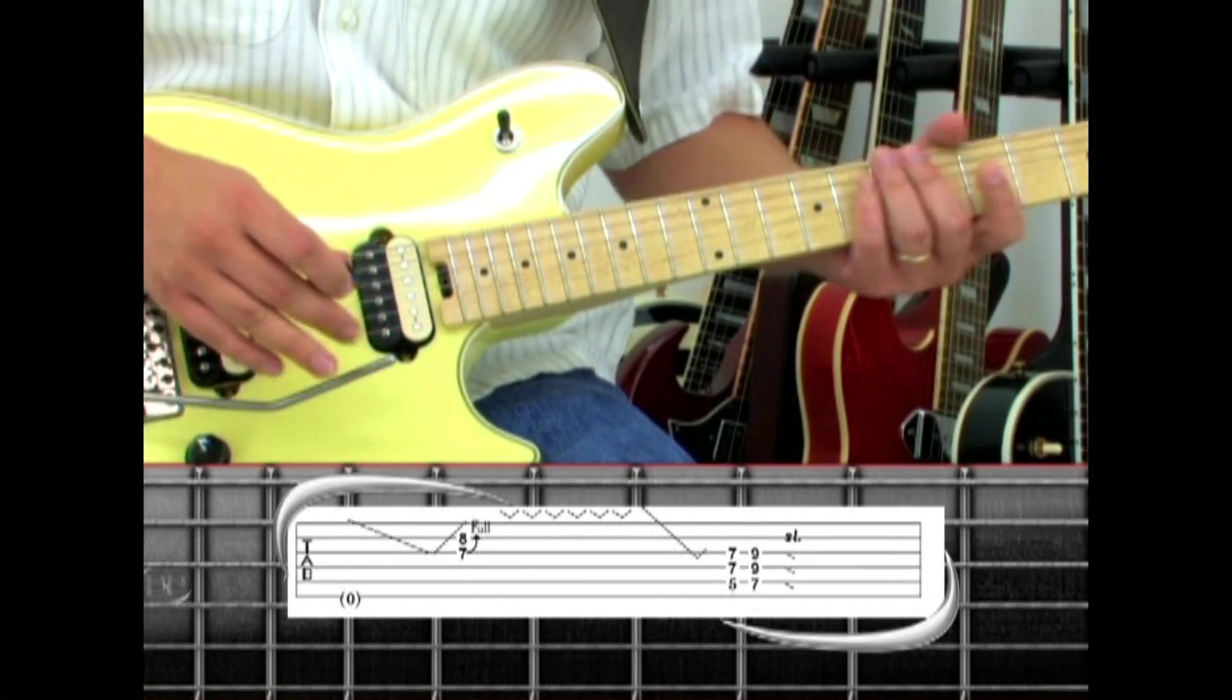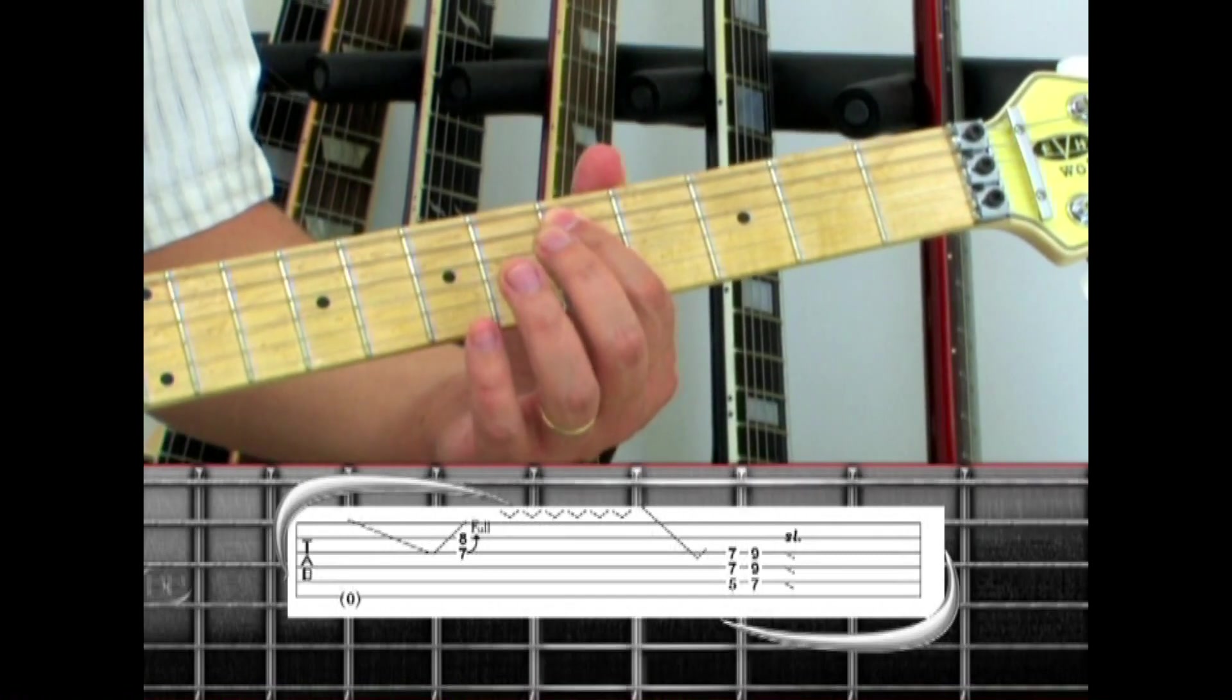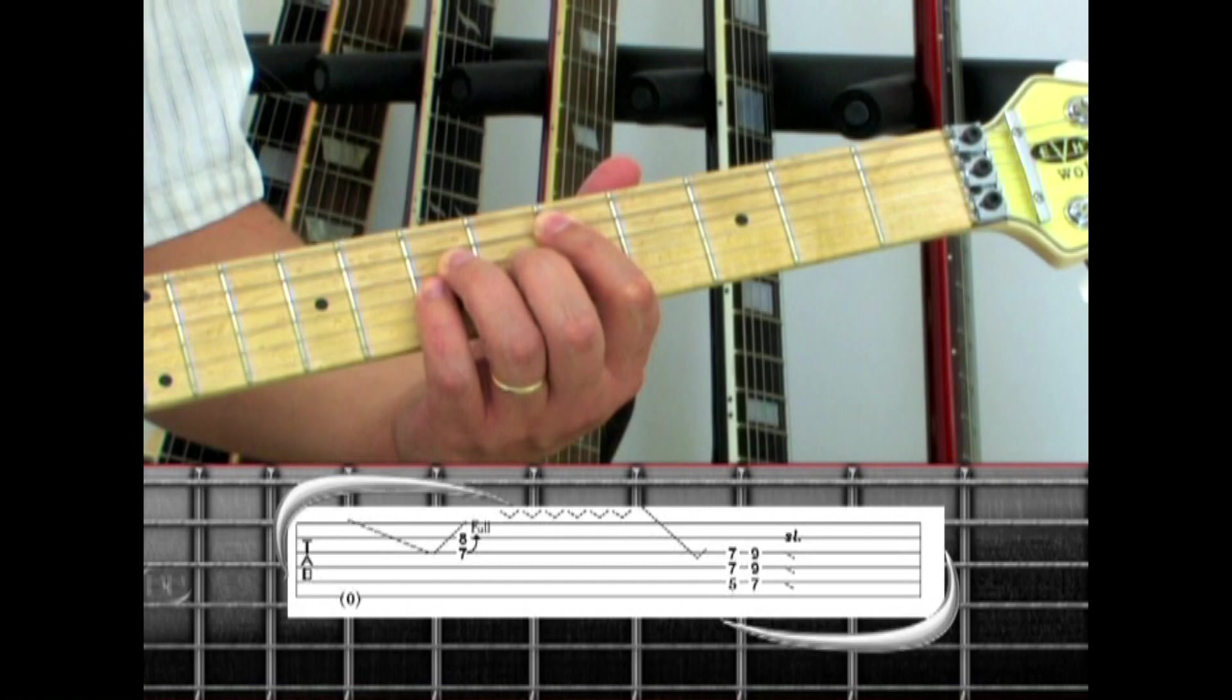This time, return the dive with the fretted D5. That's the fifth string fifth fret, fourth string seven, and third string seven.